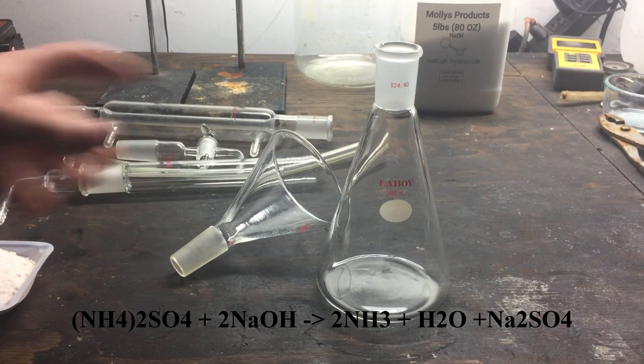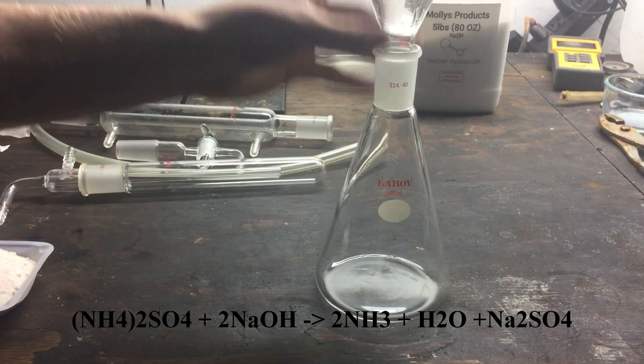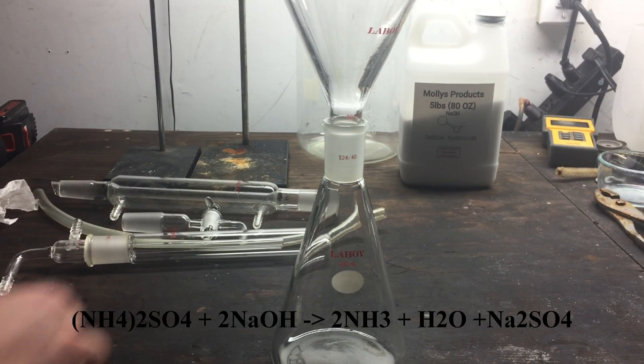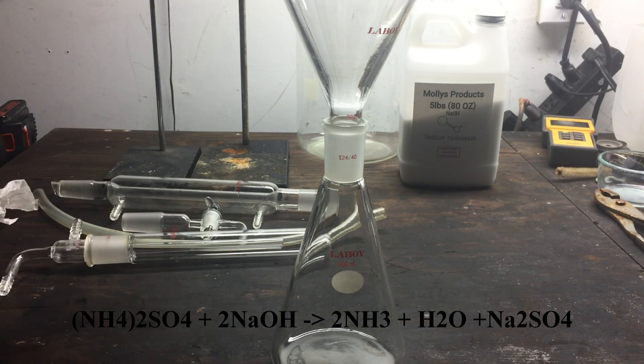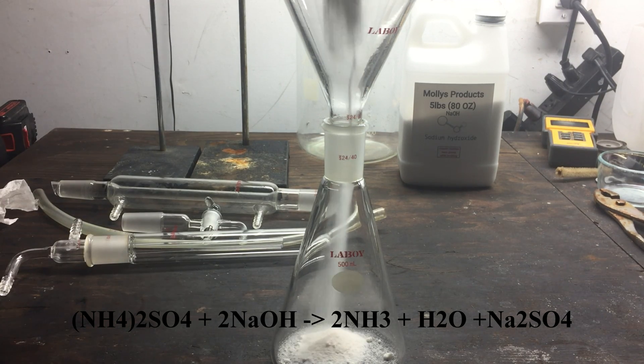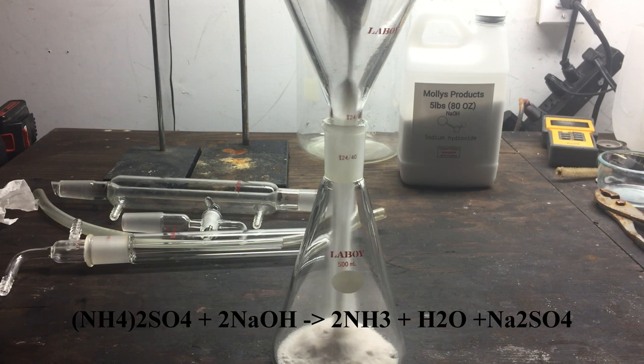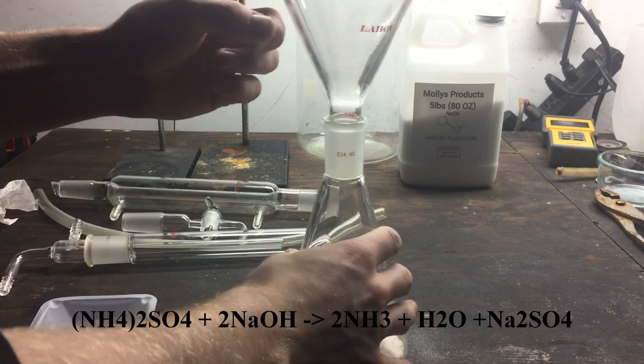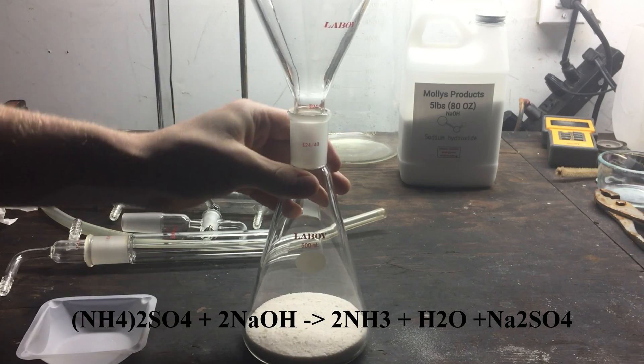After weighing, I added the ammonium sulfate to the beaker and determined stoichiometrically that I would need about 56.4 grams of sodium hydroxide based on the following equation. The products of the reaction are ammonia gas, water, and sodium sulfate.